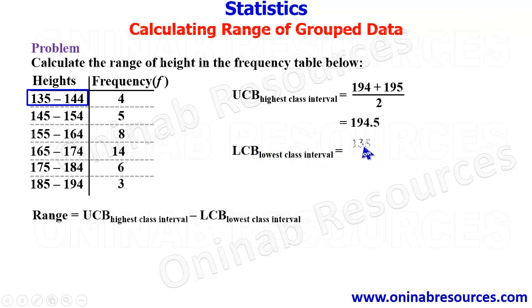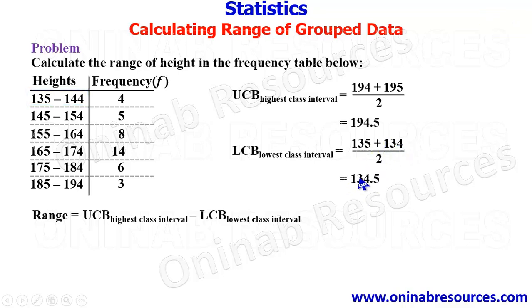We calculate: (135 + 134) ÷ 2 = 134.5. So 134.5 is the lower class boundary of the lowest class interval.